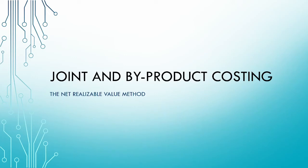Welcome to the fourth video in our series on joint and byproduct costing. In this video we are going to have a look at our third method of allocating the joint costs, namely the net realizable value method.